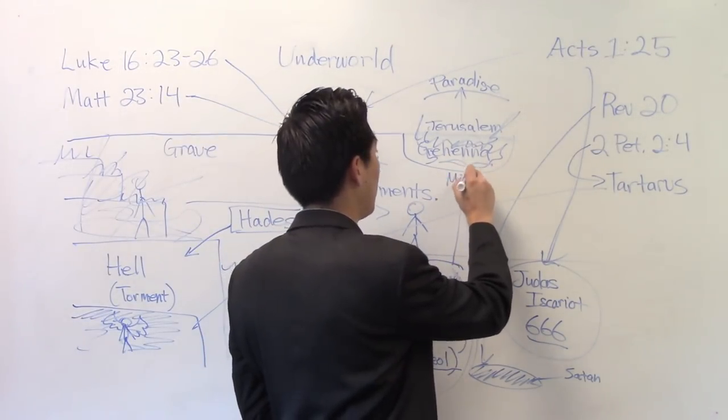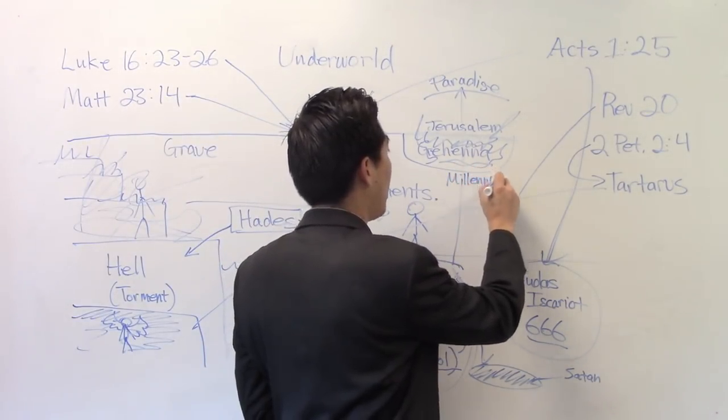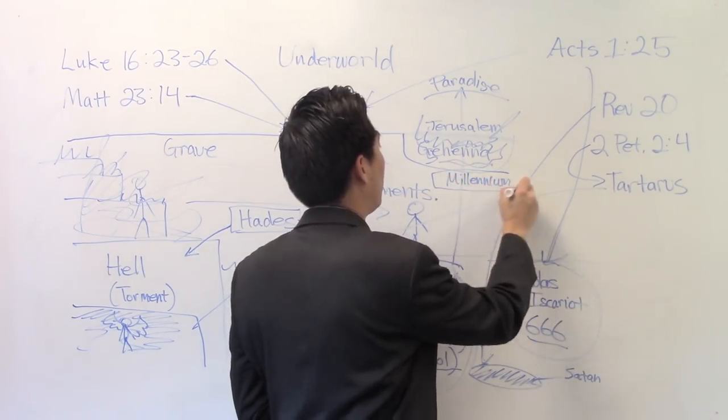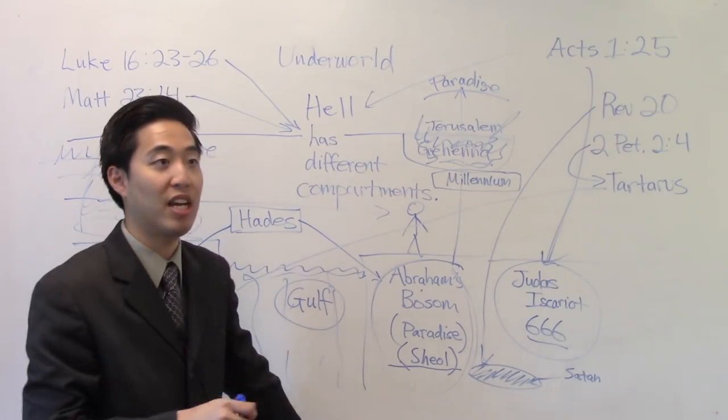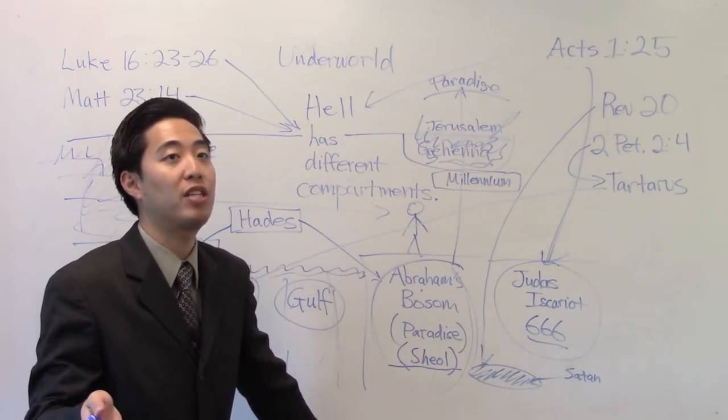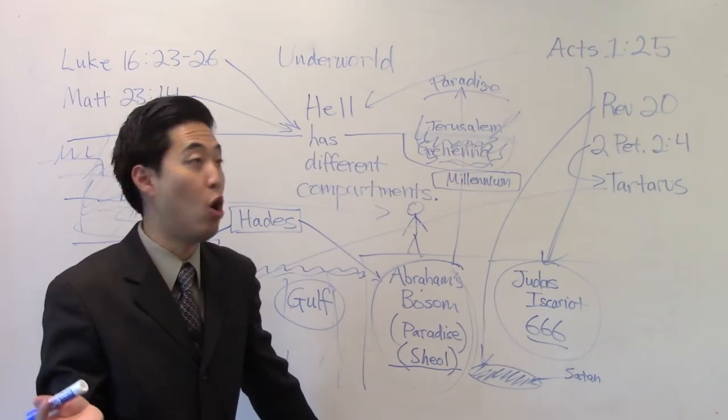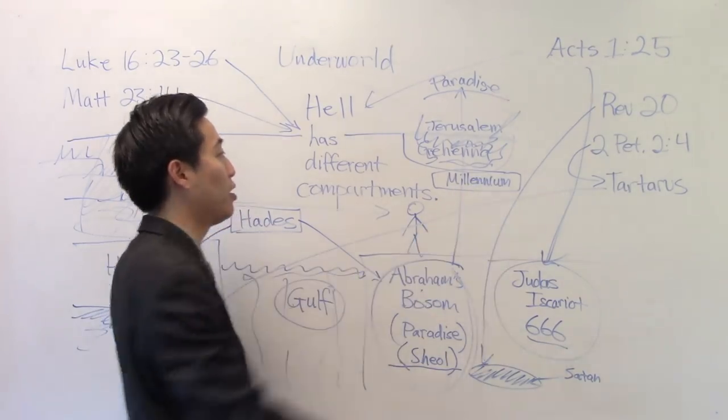And Gehenna will start at the millennium. It's gonna start at the millennium. Because if you read Isaiah 66, we won't keep reading for time's sake, but look at the context. It's when God rules on the earth with his kingdom. When does God ever set up his kingdom on earth and rule? No other dispensation except millennium. Okay. Thank you.